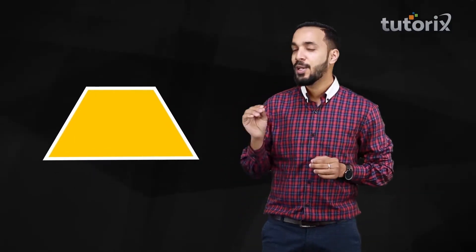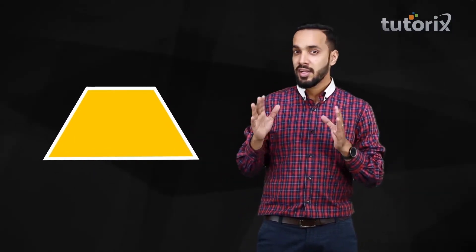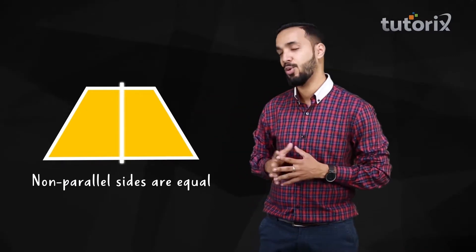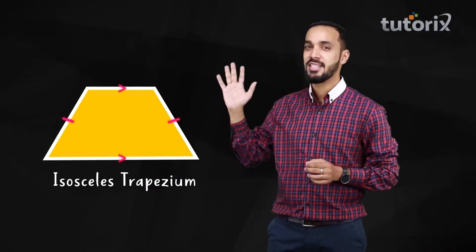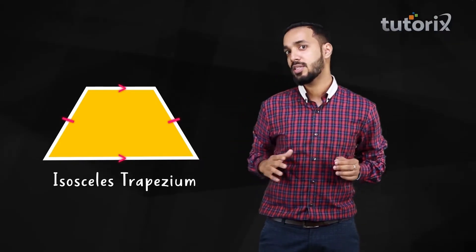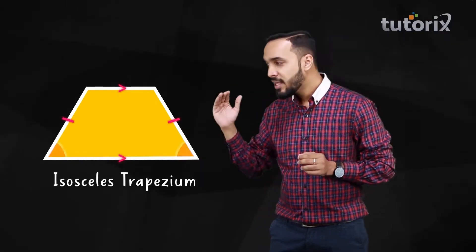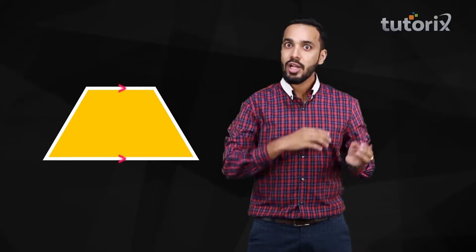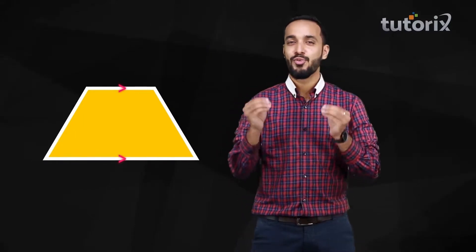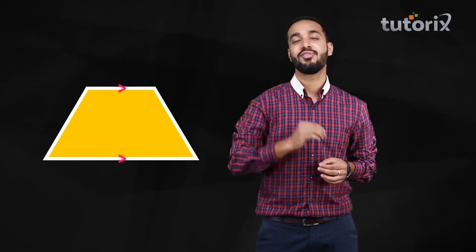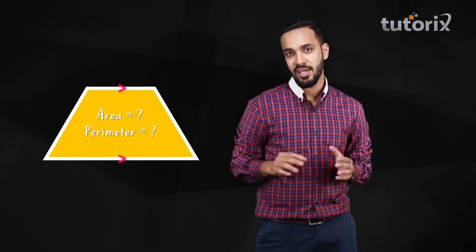Now, if you notice, you can see that here the two non-parallel sides are equal. So this one is called an isosceles trapezium. Interestingly, in an isosceles trapezium, these two angles are also equal. Now that we have recalled what a trapezium is, let us understand how to find its area and perimeter.